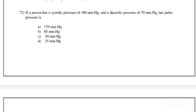If a person has a systolic pressure of 100 mmHg and a diastolic pressure of 70 mmHg, their pulse pressure is: 170, 85, 30, or 25 mmHg. Correct answer is option C, 30 mmHg.